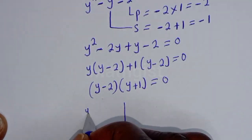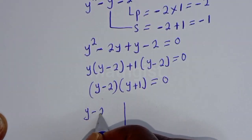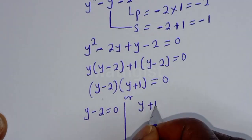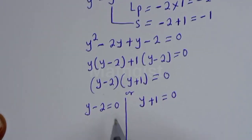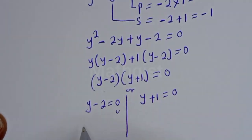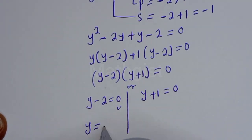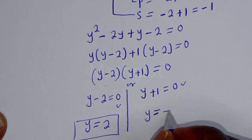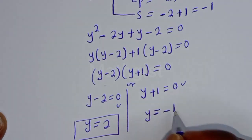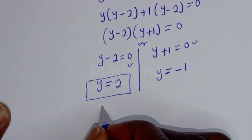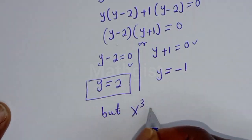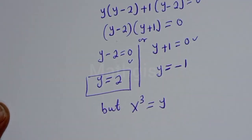The first case is y minus 2 is equal to 0, or the second case y plus 1 is equal to 0. From the first case, y is equal to 2.